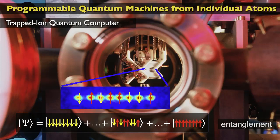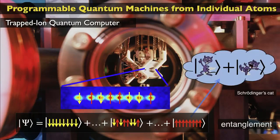If you give me n qubits, it takes 2^n configurations in the wave function. Entanglement is the reason we believe quantum computers are more powerful than their classical counterparts. This is what Schrödinger called the Schrödinger cat — the living cat and the dead cat at the same time. Here we are building a Schrödinger cat out of our quantum register.